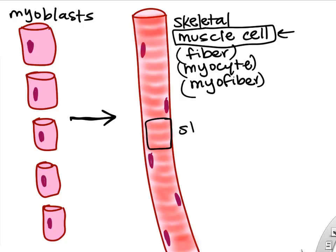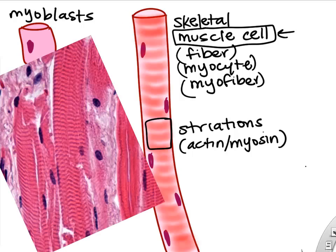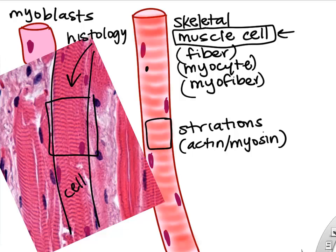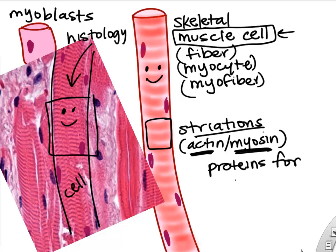Skeletal muscle cells have a lot of names: fibers, myocytes, myofibers — please don't let that confuse you. Under a microscope, you can see striations or stripes on skeletal myocytes, which relate to the pattern of actin and myosin, the contractile proteins of our muscle cells.